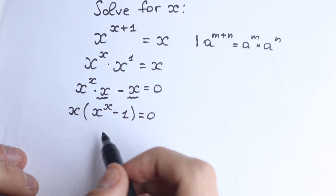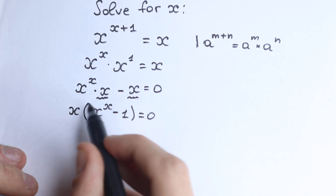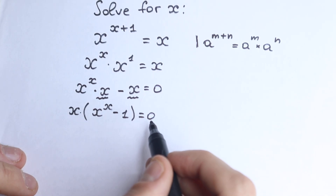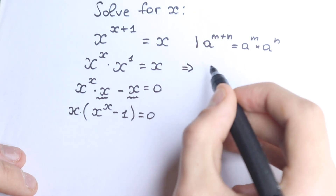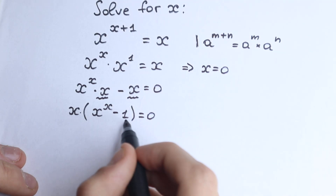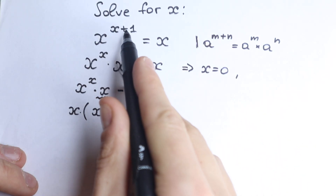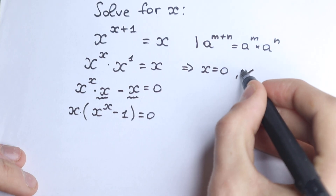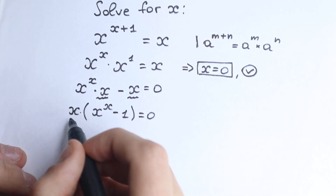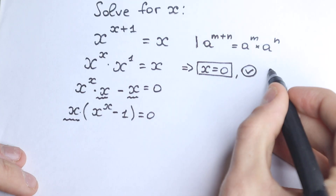Right here is a really great rule from math: if you have a product of two elements equal to zero, then you have two cases. The first case: x is equal to zero. So this x equals zero — and if x equals zero, we have zero to the power one equals zero, which is absolutely correct. So we find the first root: x equals zero.